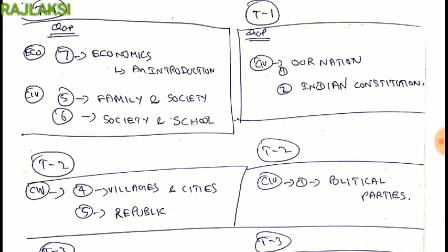That is economics, Unit 7 — economics and introduction. That is term 1. Civics, 5th and 6th unit — family and society, society and school.